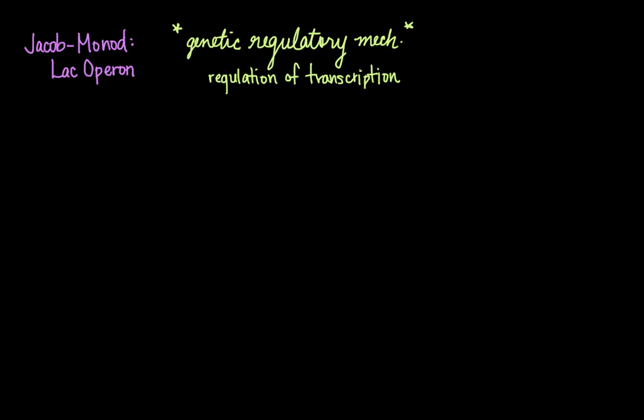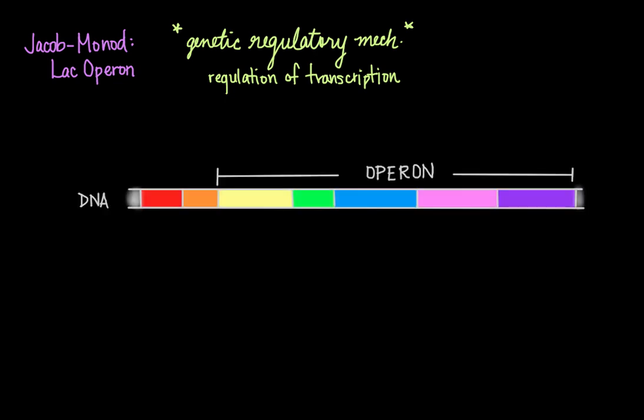An operon is a unit of genomic DNA containing a cluster of genes that are under control of a single regulatory signal, otherwise known as a promoter. These genes are co-transcribed into a single mRNA strand and either translated together or undergo trans-splicing to create single mRNAs that are translated separately. Basically, genes in an operon are expressed either altogether or not at all.